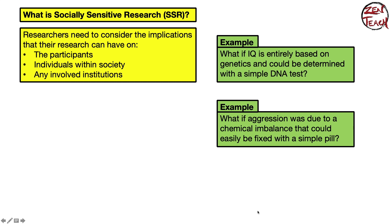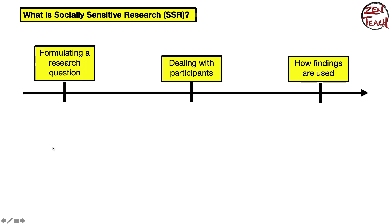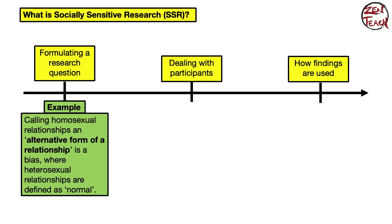Think about those two examples as we look at the spectrum from designing a research question, dealing with participants, and then applying findings to the general population. I'm going to give one example for each stage. Let's start with how to phrase a question — phrasing and framing in science.